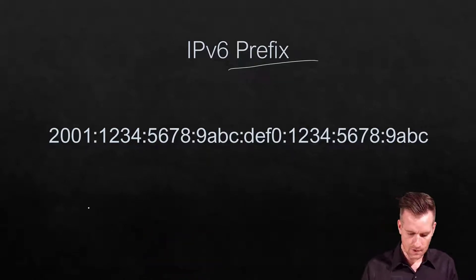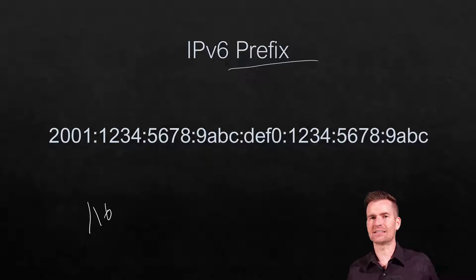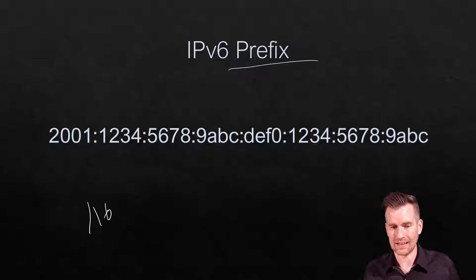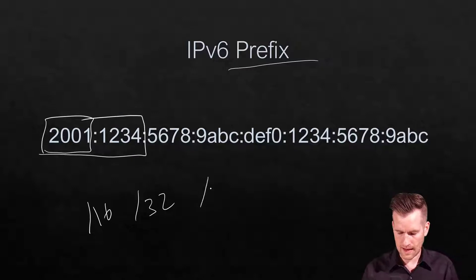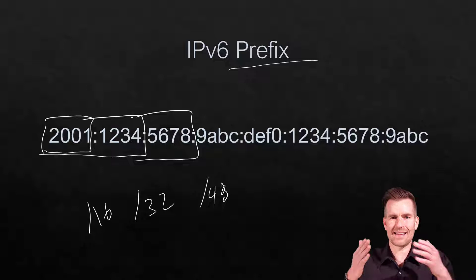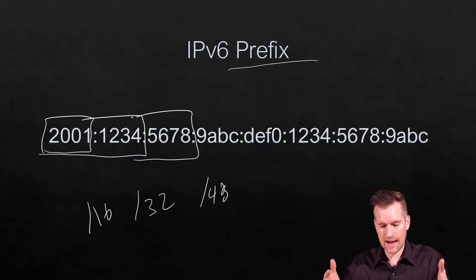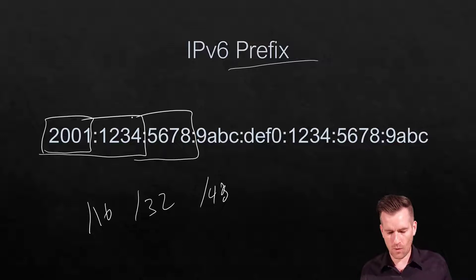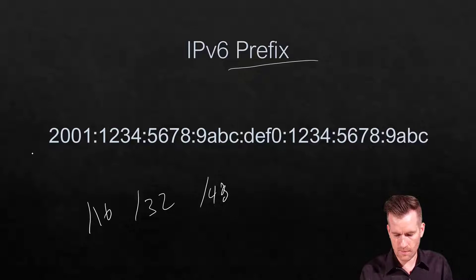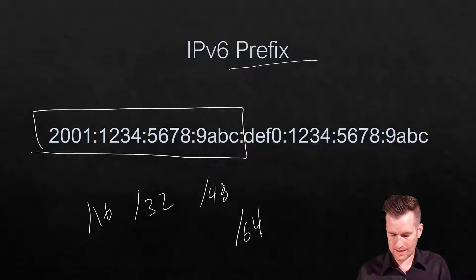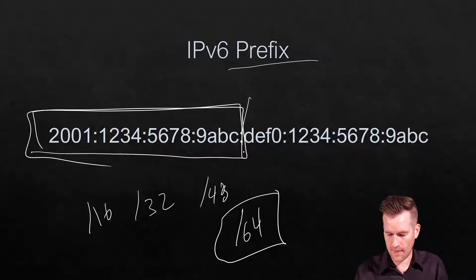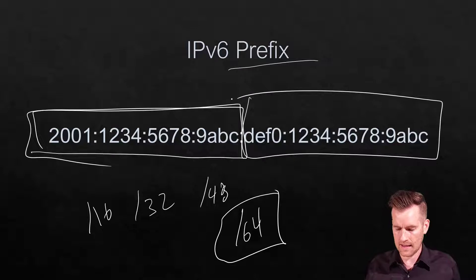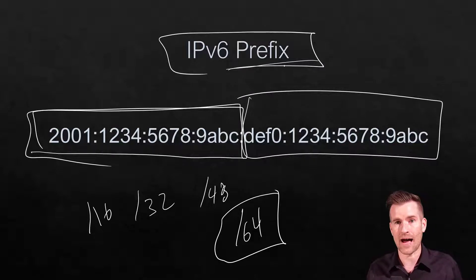When we see /16, that means 16 bits are designated for the network - the first hextet. A /32 would be up to this point, /48 up to here. The prefix length designates how many bits are assigned to the network. For most networks, it's the first 64 bits, so you'll see /64 commonly, with the last 64 bits designated for the interface.